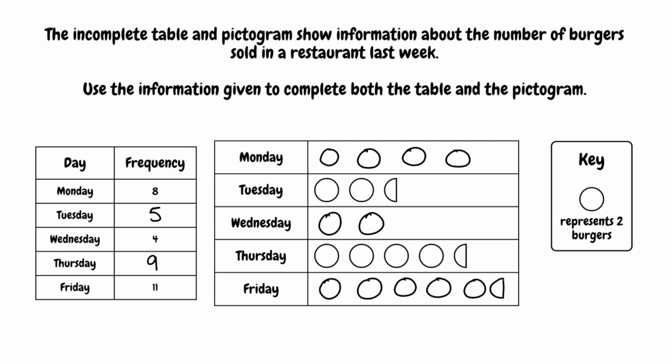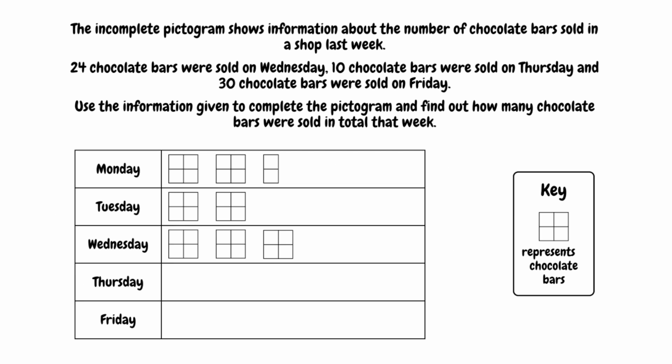So let's have a look at one more example. For this question, we have that the incomplete pictogram shows information about the number of chocolate bars sold in a shop last week. Twenty-four chocolate bars were sold on Wednesday, ten chocolate bars were sold on Thursday, and thirty chocolate bars were sold on Friday. We need to use the information given to complete the pictogram and find out how many chocolate bars were sold in total that week.